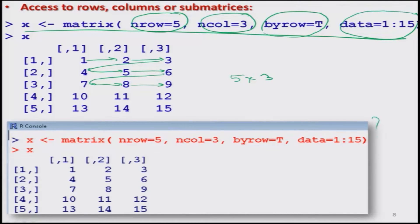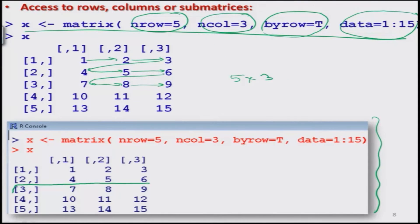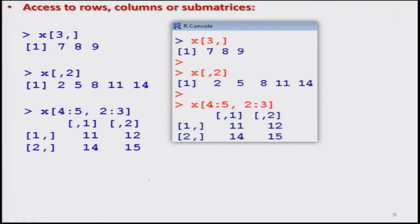Once you do this over R, you get this type of screenshot. Now suppose I want to obtain the third row of this matrix. To do this, I write the name of the matrix followed by square brackets — inside the bracket, I write the row number 3, then comma, then blank. Once you do so, you get the third row as the outcome, as you can see here.